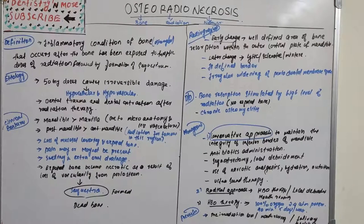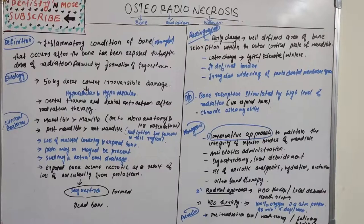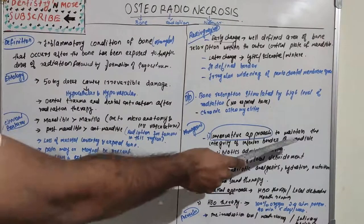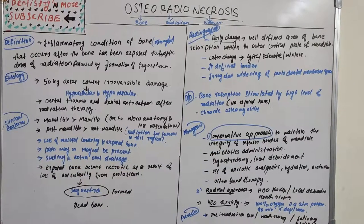Exposed bone and loss of mucosal covering are critical features of osteoradionecrosis. Chronic osteomyelitis is another differential diagnosis. Regarding management, osteoradionecrosis is not entirely preventable because people with malignancy in the head and neck region must undergo radiation. Sometimes this is inevitable; still, management is based on either a conservative approach or a radical approach.